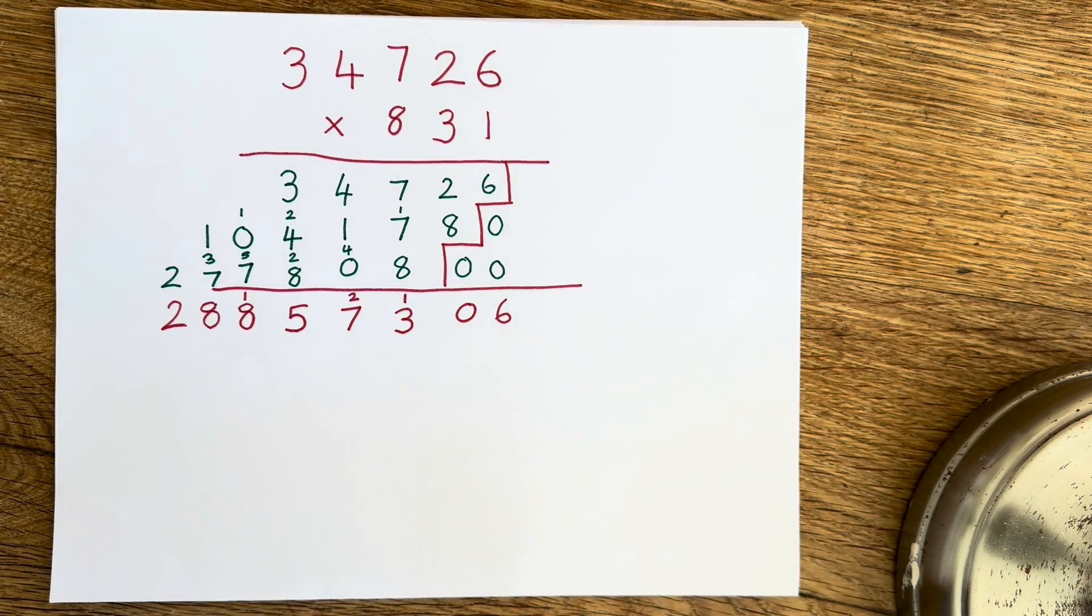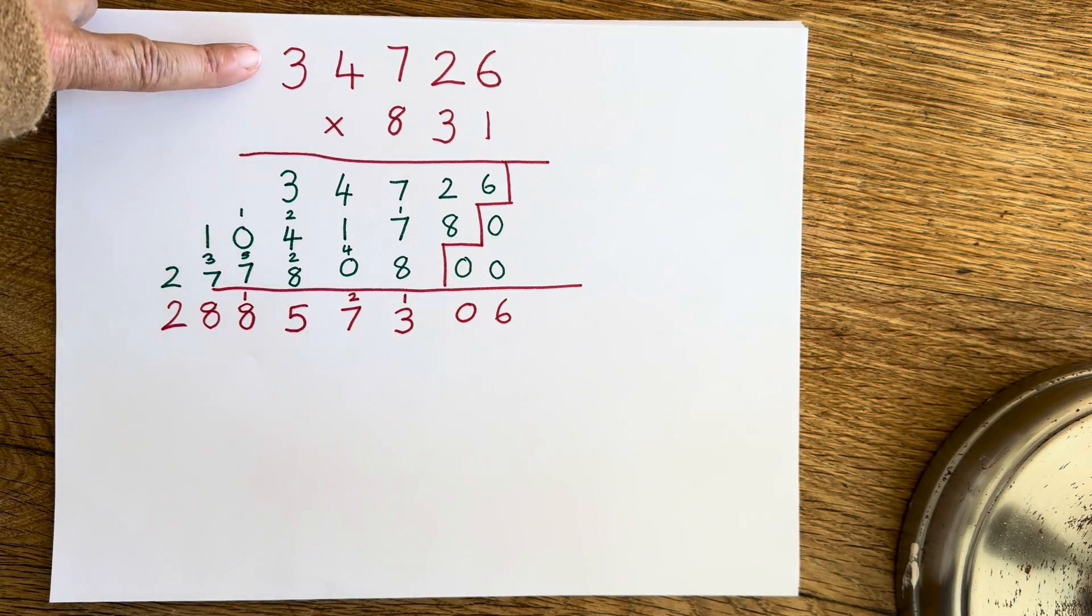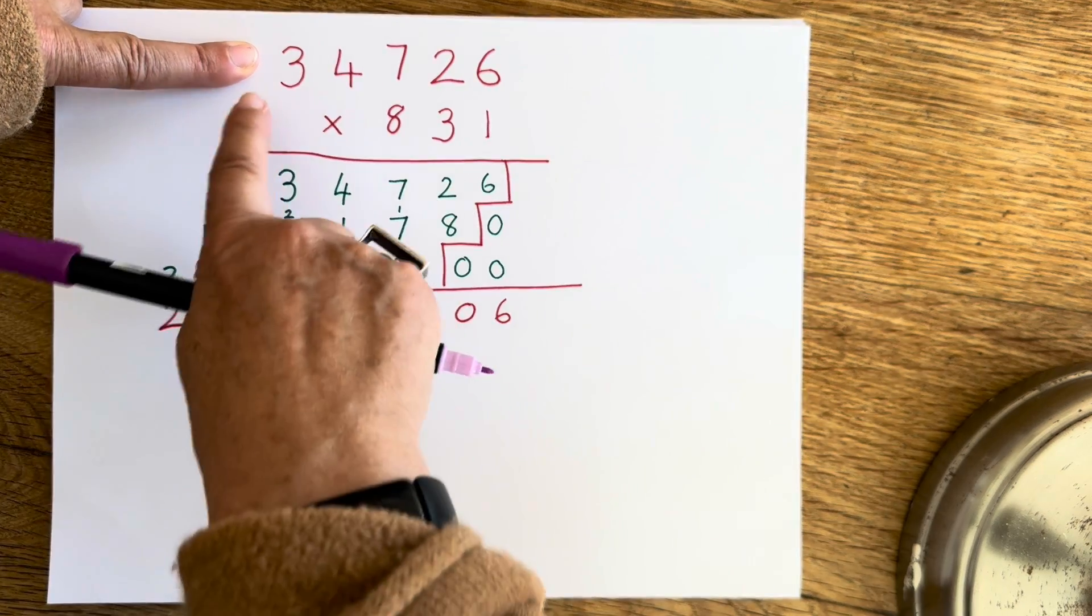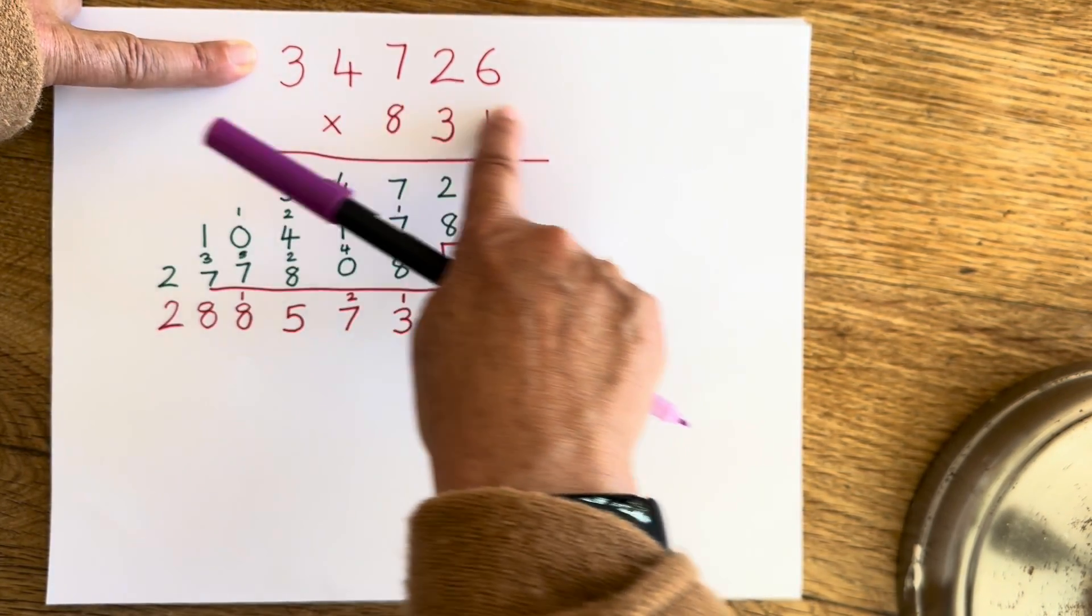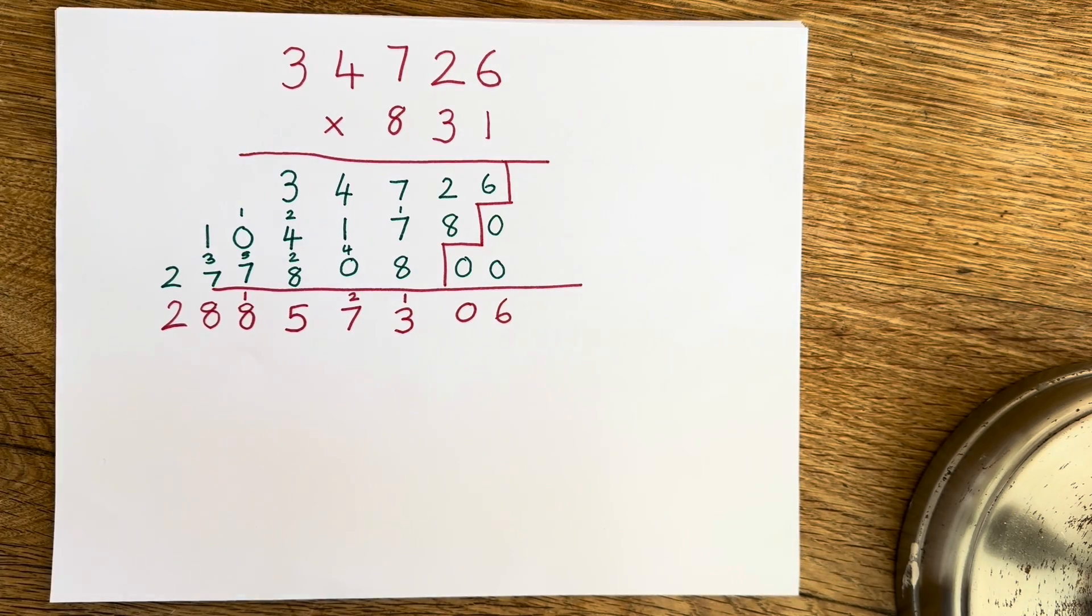So the first thing that I do is I look at the very big number at the top, this number just here, and I'm going to look for any digits within this number that add up to nine.